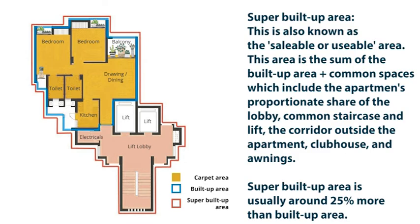Super Built Up Area is also known as the saleable or usable area. This area is the sum of the built up area plus common spaces, which includes the apartment's proportionate share of the lobby, common staircase and lift, the corridor outside the apartment, and clubhouse amenities.